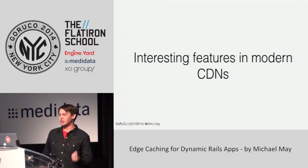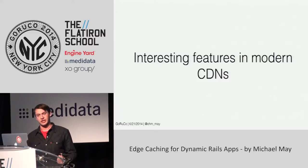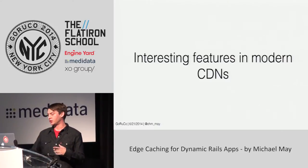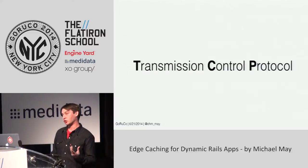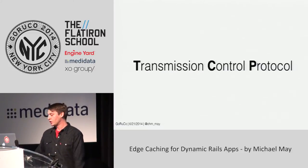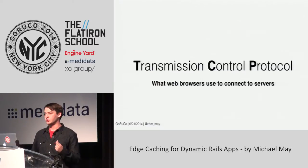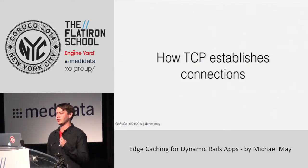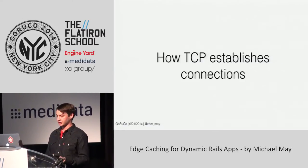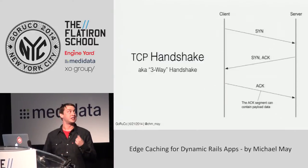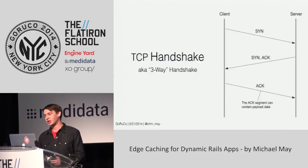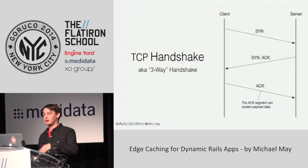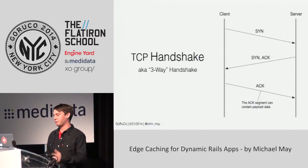Now we're going to talk about some interesting features you might not know some content delivery networks have. Before we talk about the first one, we need to know a little about TCP — transmission control protocol — a protocol that web browsers use to connect to servers. Specifically, we need to know how TCP establishes connections with the TCP three-way handshake. When the client wants to connect, it sends a SYN specifying synchronization data. The server sends back a SYN-ACK acknowledging the client's request and providing more synchronization data. When the client receives the SYN-ACK, it sends an acknowledgment back, and then data can start to flow.